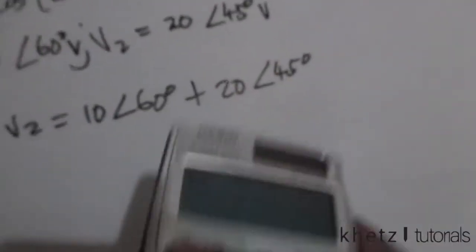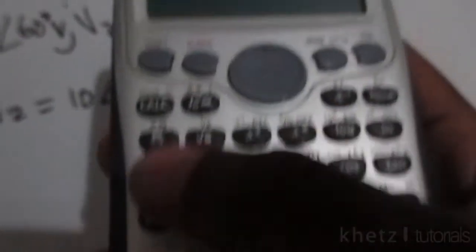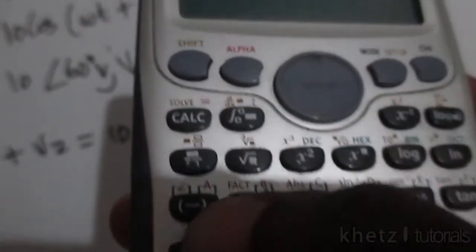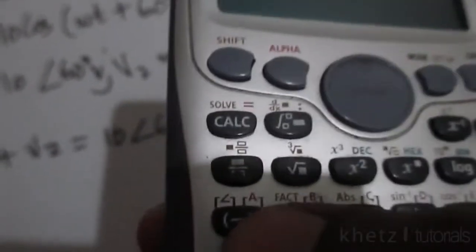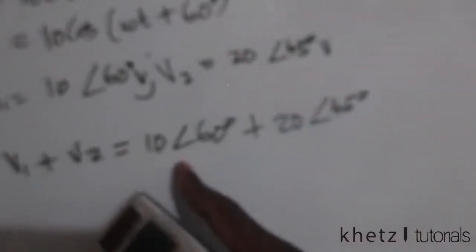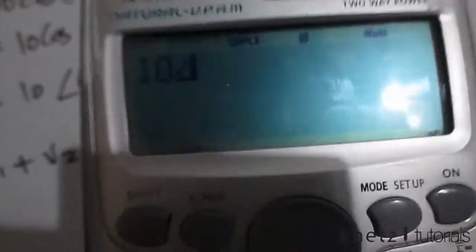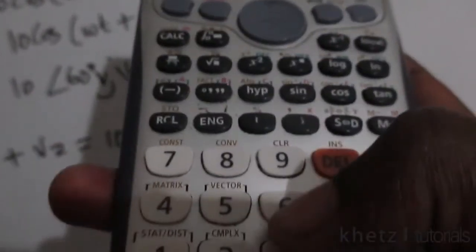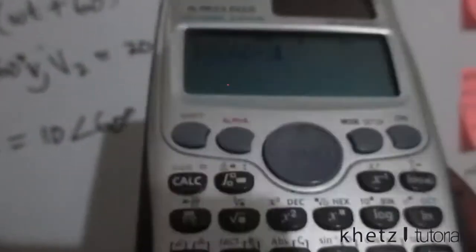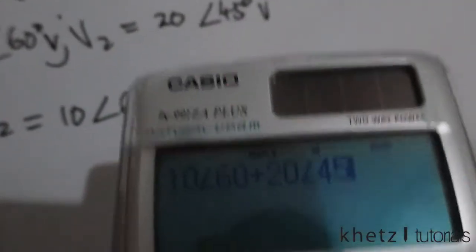Enter 10, then press shift and the dash within brackets that has the angle symbol to input the angular part. Enter 60, which is our angle. Then press plus, enter 20, use the angle function again, and enter 45 for the second phasor.